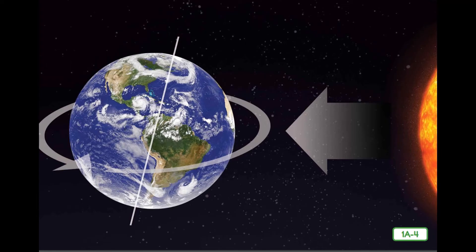Rotation is the movement of earth on its axis. This controls the cycle of daytime and nighttime. Earth takes 24 hours to turn, or rotate, back to the position from which it started. Rotation takes us from daytime to nighttime and back to the very beginning of daytime again before the cycle starts over. As earth rotates, light from the sun falls on one half of earth — we call this daytime. The other half of earth is in darkness, and we call this nighttime. As earth continues to rotate, the part that has sunlight moves into darkness, and the part that had darkness moves into the sunlight. This is a never-ending cycle of daytime and nighttime.